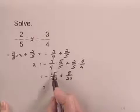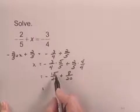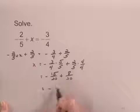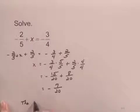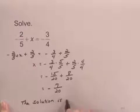And I can finish out the addition by adding the numerators. And I can think of this fraction as negative fifteen over twenty. So I would be adding negative fifteen and eight, which is negative seven, and keep the common denominator of twenty. So the solution is negative seven over twenty.